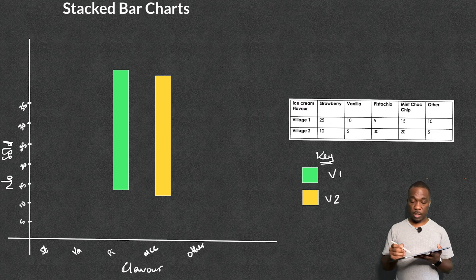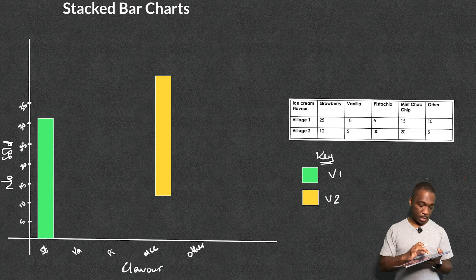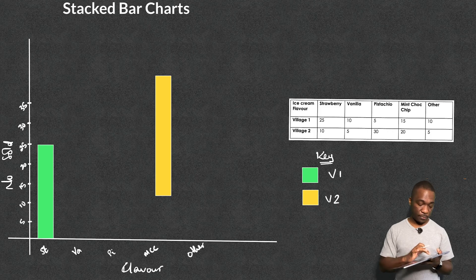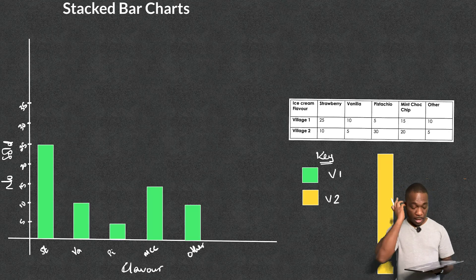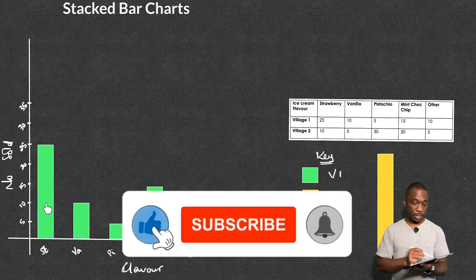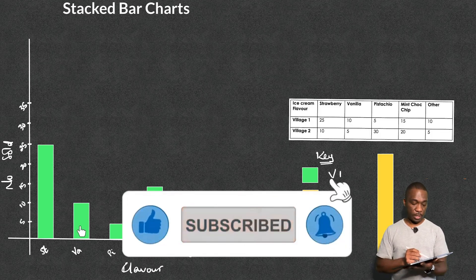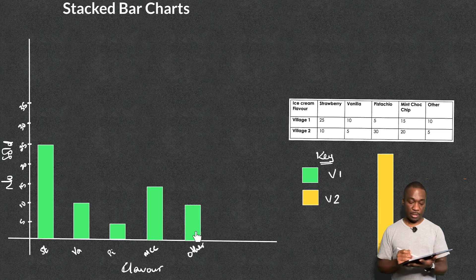Now let's deal with village 1 first and then we go on to village 2. So for village 1 I need to go all the way over to 25. And this is for my strawberry ice cream, so 25. So I'm just going to bring this down just a little bit there to 25. Perfect. Now let's go plot the next one. Next one needs to be 10. Okie dokie. So now I've plotted all of my ice cream sales for village 1. And as you can see, 25 for strawberry, vanilla is 10, 5 here for the pistachio, 15 for the mint choc chip, and another 10 for other that's across the top there.